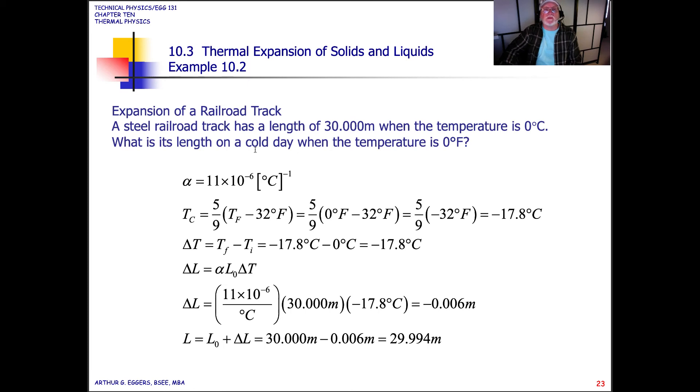A steel railroad track, same relationships. What is the length on a cold day when the temperature is zero degrees Fahrenheit? So they're asking us to do some conversions here. We have the same alpha. We now have to use our conversions. Temperature in Celsius is equal to 5 ninths the difference in the two temperatures. So we have zero and minus 32. So it becomes 5 ninths of minus 32 degrees Fahrenheit, or minus 17.8 degrees Celsius. The change in temperature from minus 17.8 to zero is minus 17.8. So now we can put that change in temperature relationship into our change of length relationship, and we end up with minus 0.006 meters, or an overall change in length of 30 minus 0.006 or 29.994 meters.